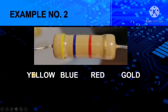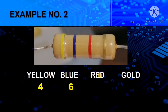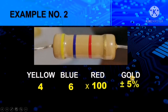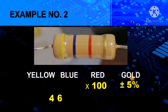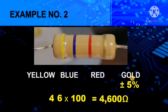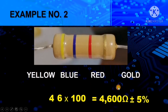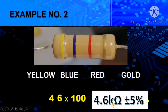Another example: we have colors yellow, blue, red, and gold. Yellow has a value of 4, blue has a value of 6. Red has a value of 2 in the first and second color, so as a multiplier it has 2 zeros — therefore a value of times 100. Gold has a value of plus or minus 5%. Putting the first and second digit together — 46 times 100 — the answer is 4,600 ohms plus or minus 5%, or simplified: 4.6 kilo ohms plus or minus 5%.